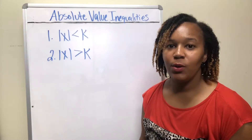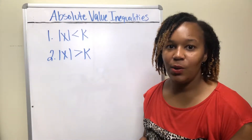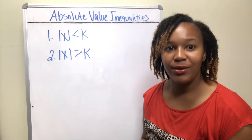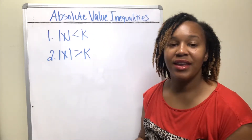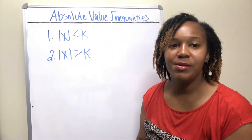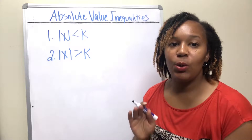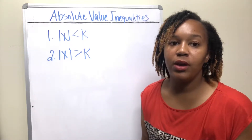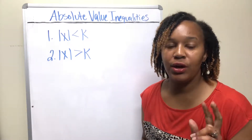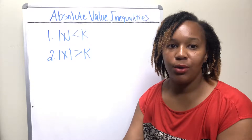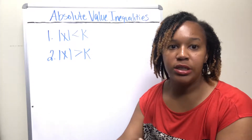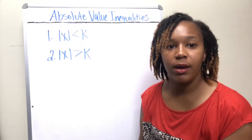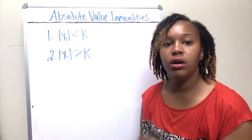An absolute value inequality is an inequality that has an absolute value in it and an inequality symbol. To solve absolute value inequalities, there are two important rules you need to know in order to get rid of the absolute value bars.